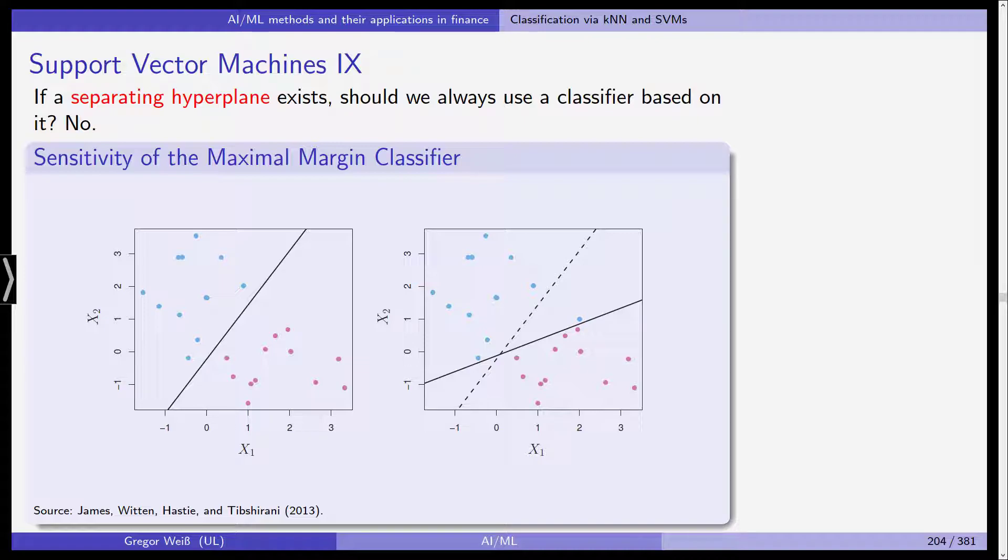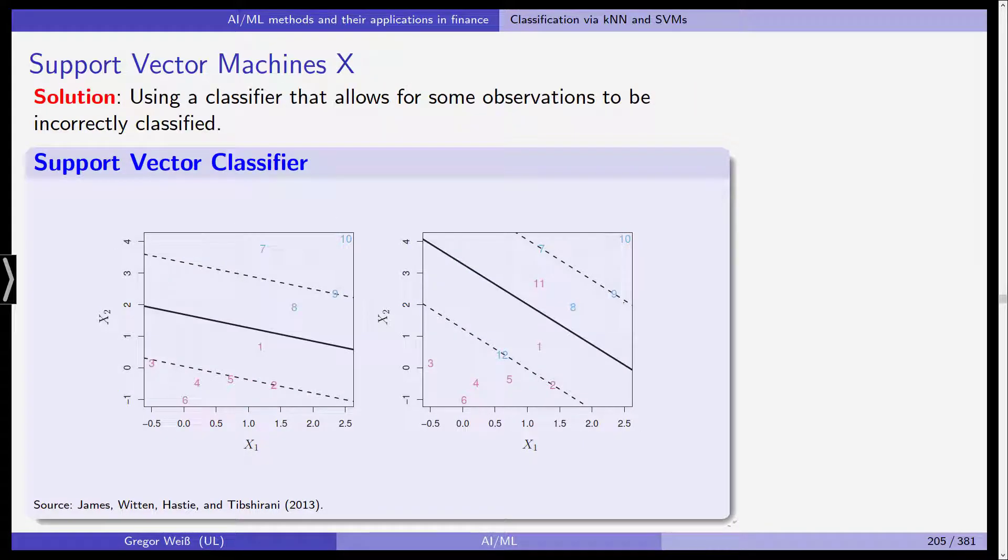If we add new data points then the decision boundary, which is the line here, for example here, is quite sensitive to these newly added observations. So the question is can we make this classifier a little less sensitive to new observations and a little more forgiving? And this is where we actually now arrive at the so-called support vector classifier.